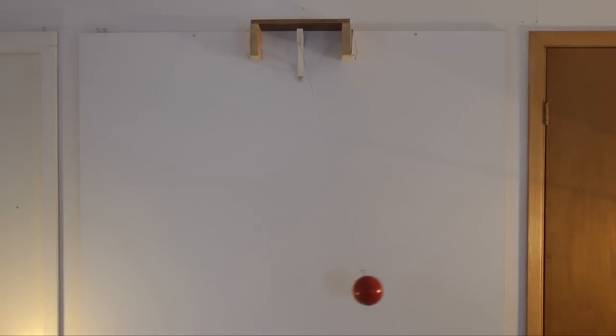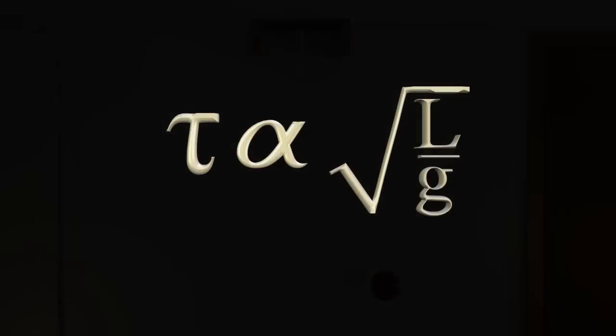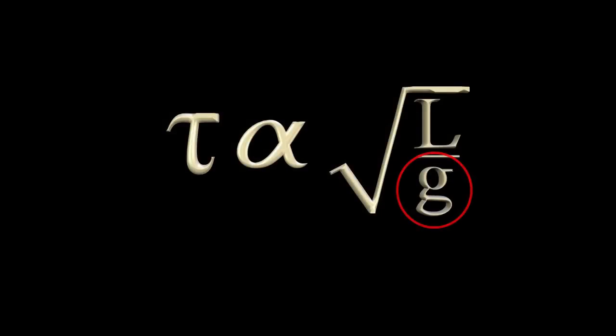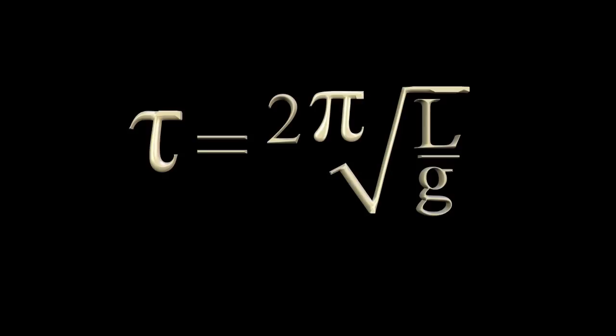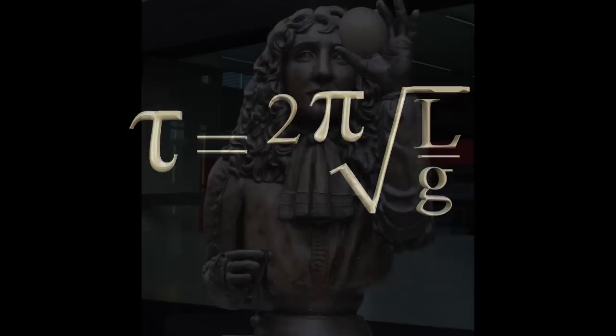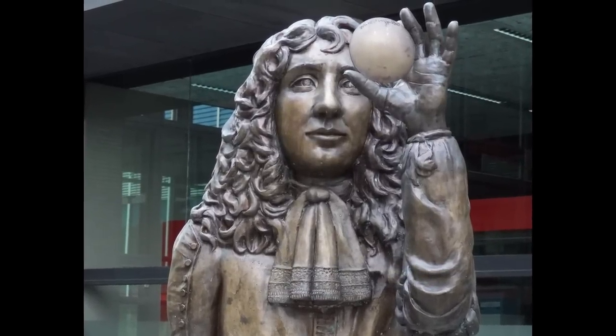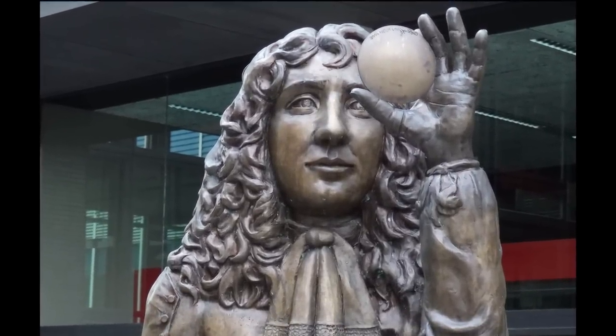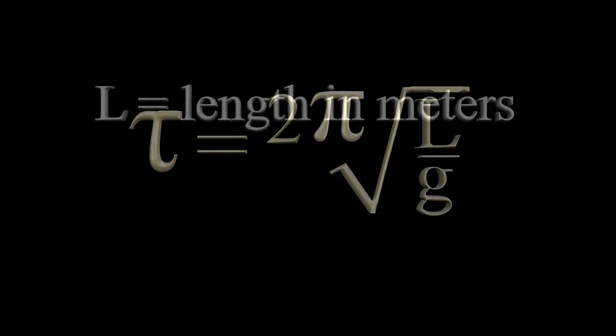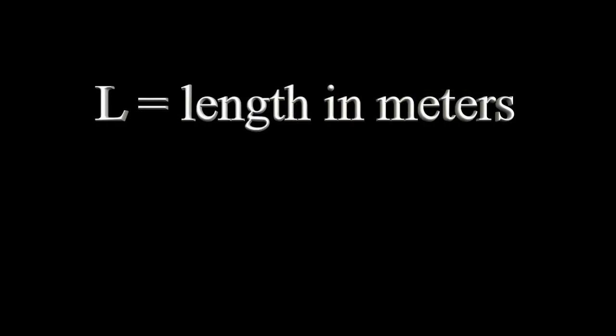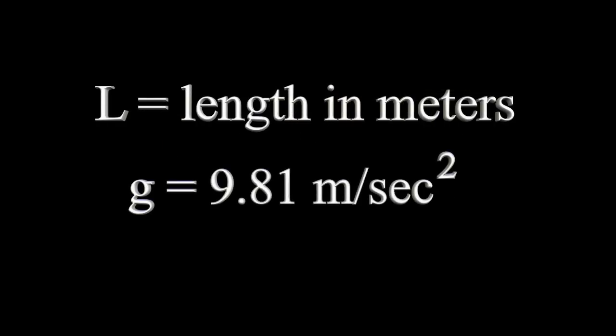With a growing understanding of the effect of gravity on a pendulum's period, this formula was modified to include gravity, evolving to this final version. This important formula is attributed to the 17th century Dutch scientist Christian Huygens. This formula states that the period of a pendulum equals 2 pi times the square root of L over g. L represents the length of the pendulum in meters, and g is acceleration due to gravity, 9.81 meters per second squared.